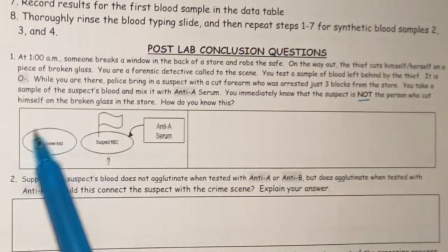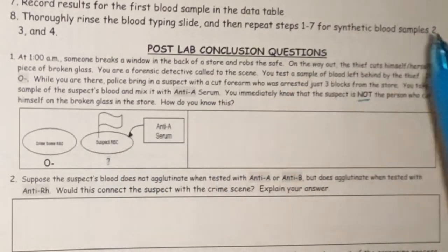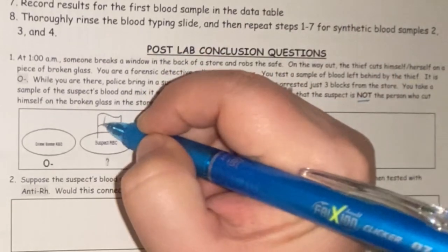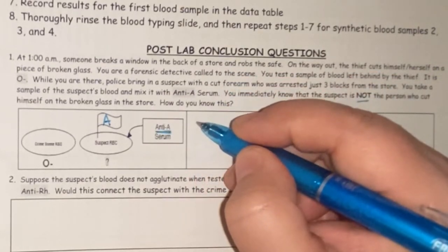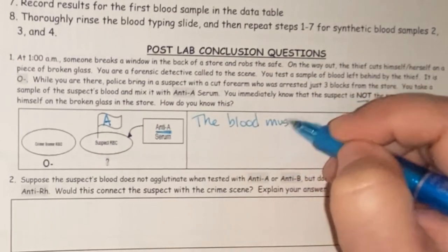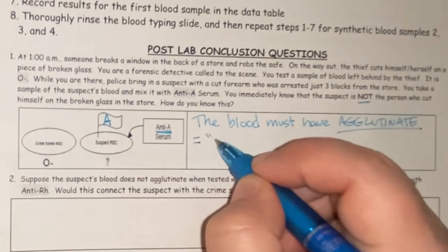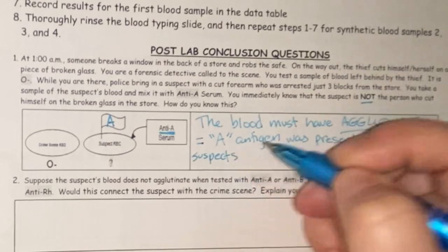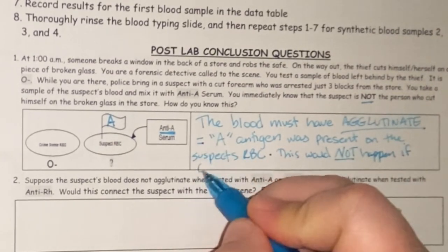At the crime scene we have O negative blood — no antigens on the red blood cell. The suspect's blood, when mixed with anti-A serum, agglutinated. So there must be an A antigen on the suspect's red blood cell — that's the only way it would agglutinate. This would not happen if the suspect's blood was O, since there are no antigens and there'd be no reaction.